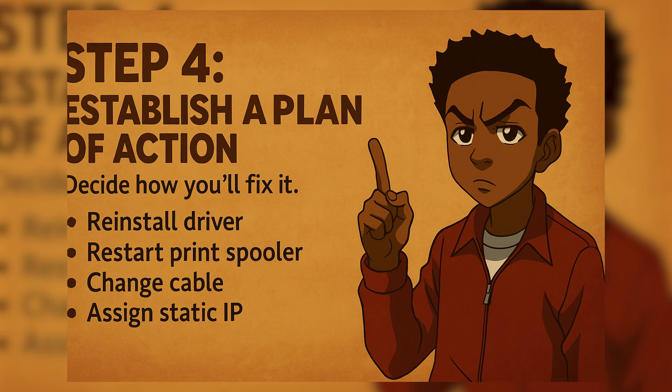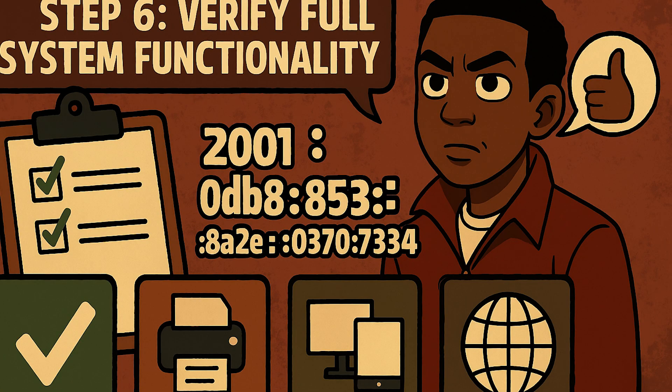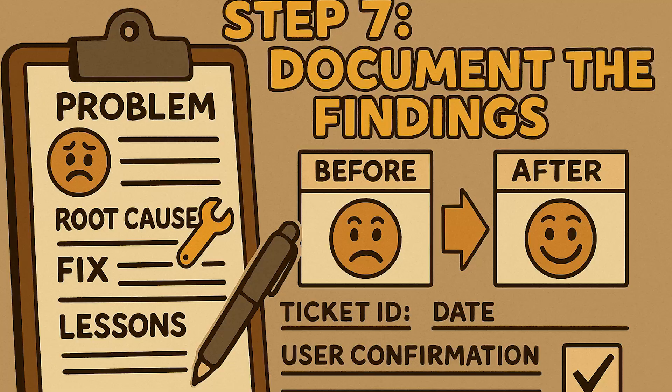Step four: establish a plan of action. Decide how you'll fix it — maybe you'll reinstall the printer or restart the print spooler service. Step five: implement the solution. Go ahead and make the fix, but do it carefully, especially in a production environment. Step six: verify full system functionality. Once it's working, make sure everything still works — don't just assume the issue is resolved; confirm with the user.